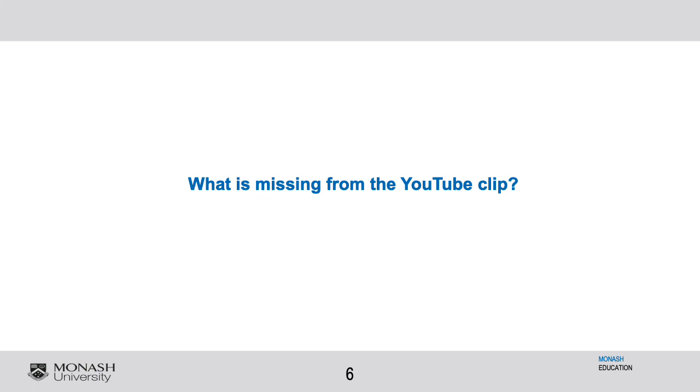I'm unable to show you this YouTube clip on this presentation today, but please go into the slides on Moodle and watch it for yourself. It's a very interesting YouTube clip — 'Diversity matters in education.' I want you to watch it thoroughly after you've listened to my online lecture today. Think about what is missing from this YouTube clip. It presents a picture of diversity — what's actually missing there? Going back to your definition of diversity, what doesn't the YouTube clip include?